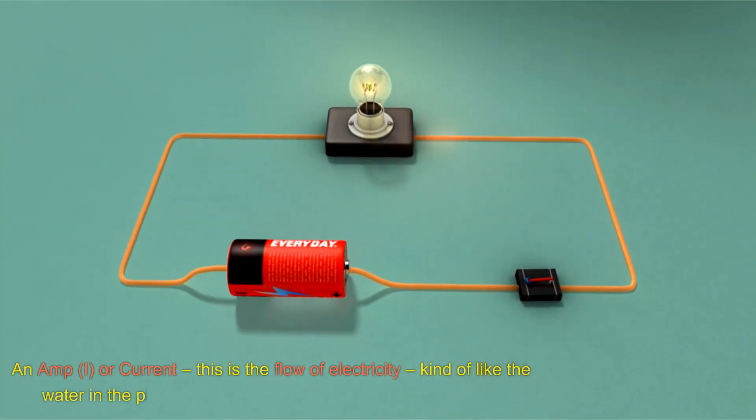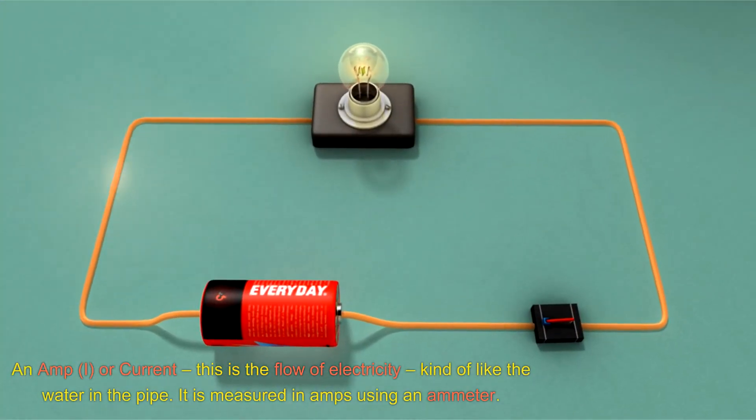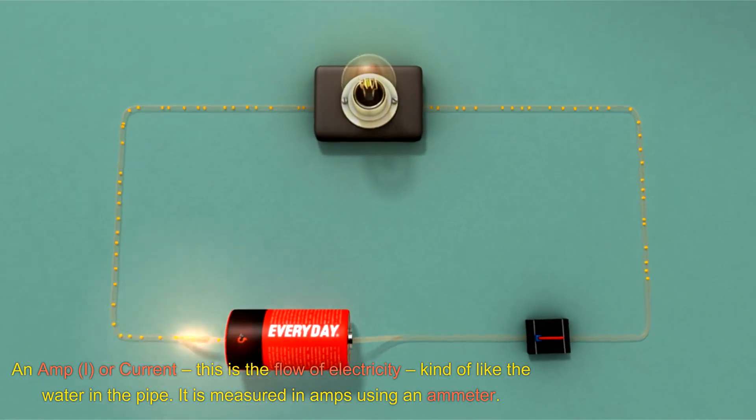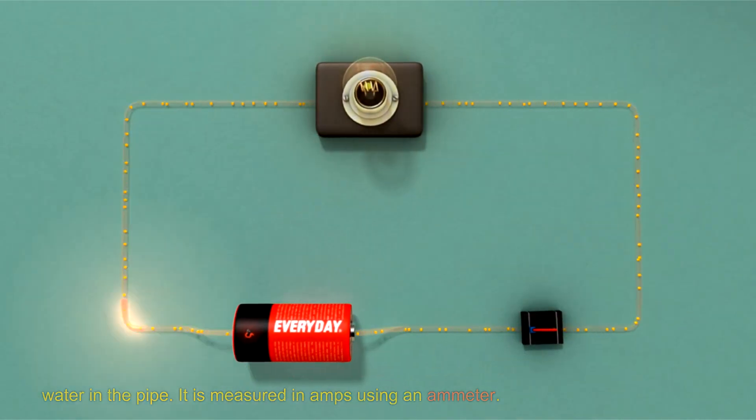An amp (I), or current. This is the flow of electricity, kind of like the water in the pipe. It's measured in amps using an ammeter.